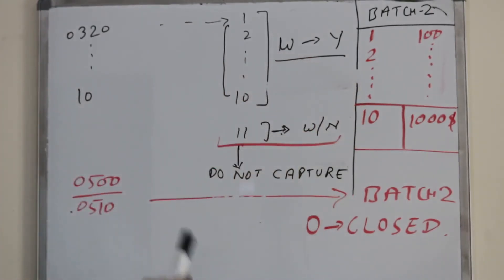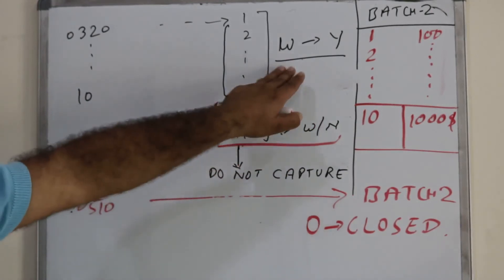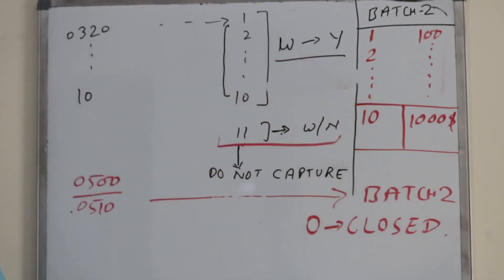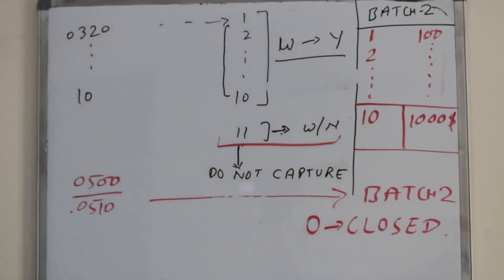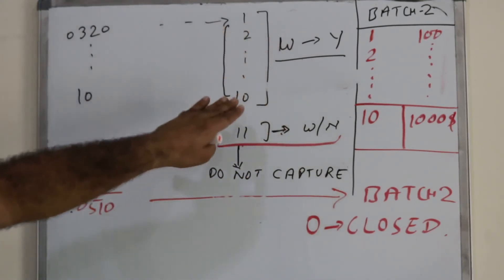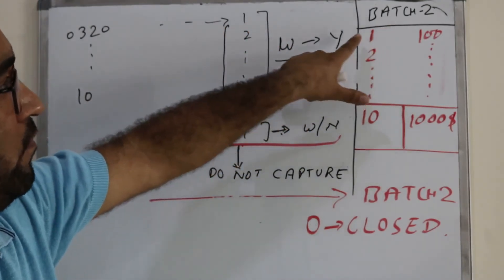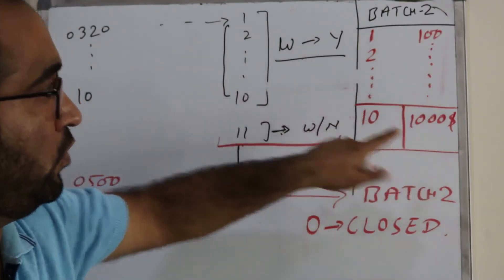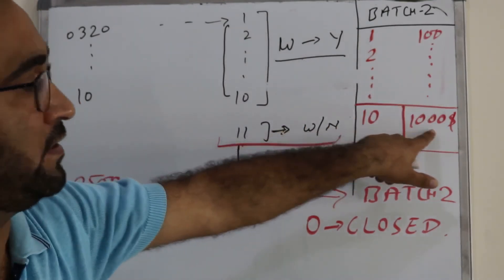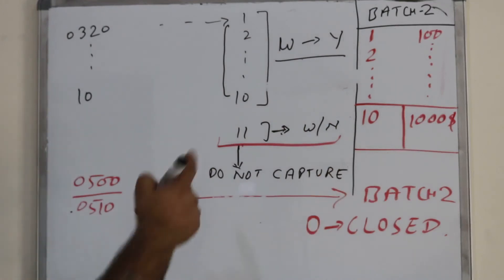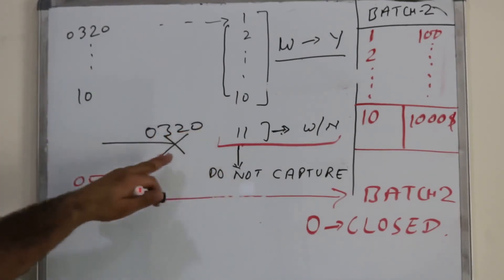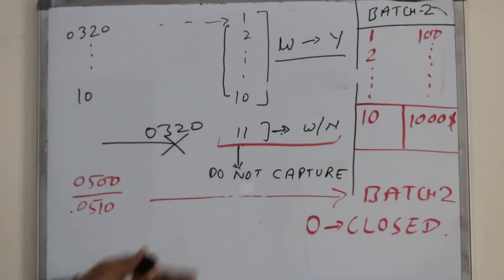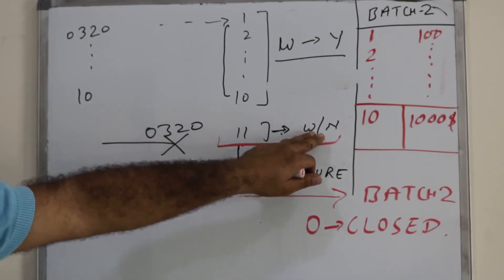The acquiring bank changes the flag from W to Y — from waiting to yes, capture to settle — meaning these 10 transactions can now be used to settle the merchant. They also keep incrementing the batch count, so after 10 transactions the count is 10 and the amount is $1,000. However, for the 11th transaction there will be no 320 message from the POS device, so that transaction's flag will remain W or N.